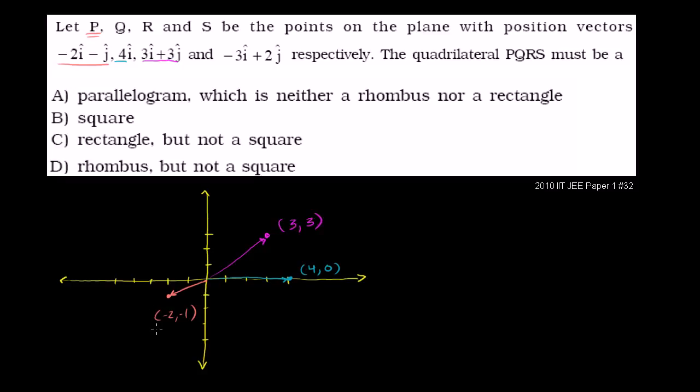And then finally, we have negative 3i. Let me do this in another color. Negative 3i. So 1, 2, 3 plus 2j. 1, 2. So right over there. So that is that last position vector, and it's specifying the point negative 3 comma 2.